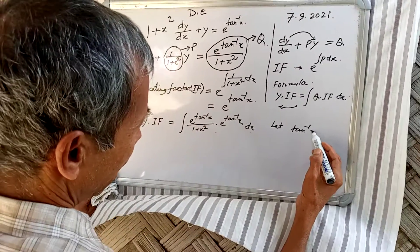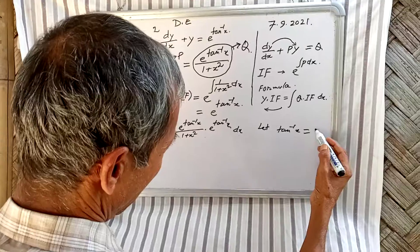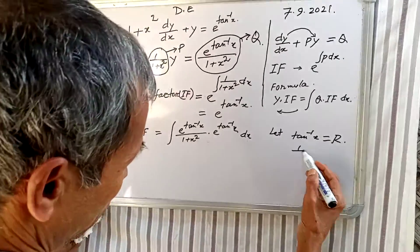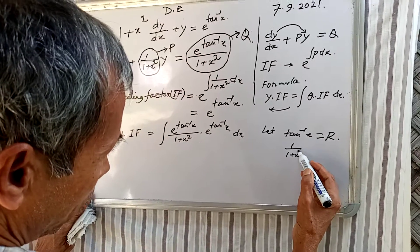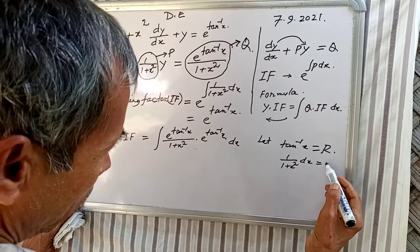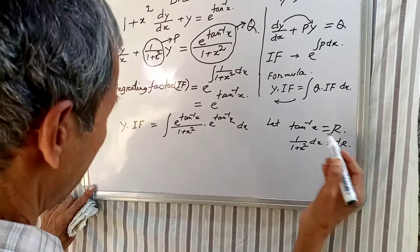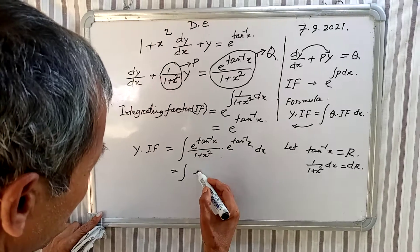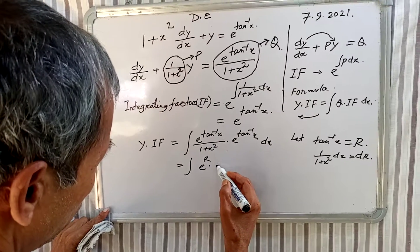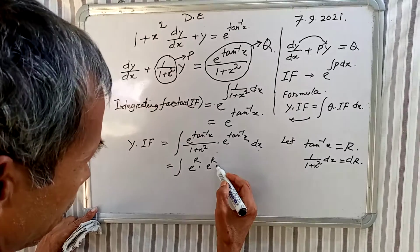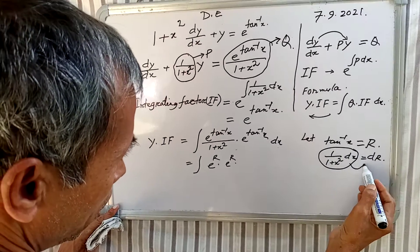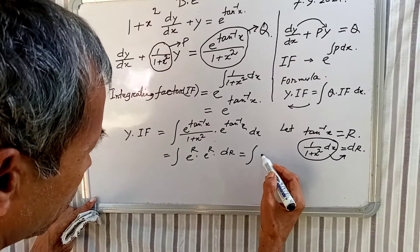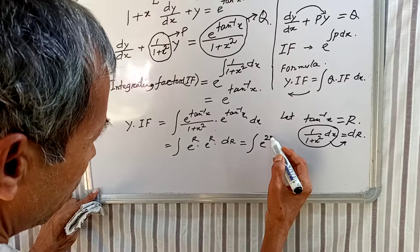Let tan inverse x = r, therefore 1/(1 + x²) dx = dr. The integral becomes integration of e^r · e^r dr = integration of e^(2r) dr.